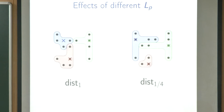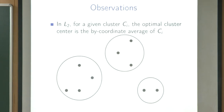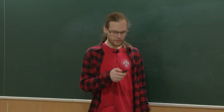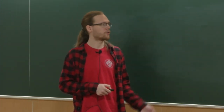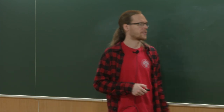Let's start with some simple observations to get the flavor of the problem. In the L2 case, it's well-known that if we have a given set of points, the cluster center minimizing the total distance is always the coordinate-wise average. So we know exactly what the center should be if we already know which points are in which cluster — we just take the sum of all points and divide by the number of points.